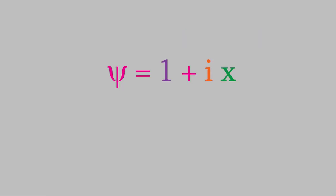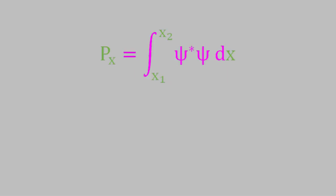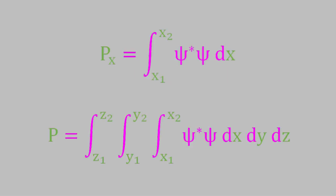What was wrong with that wave function? First, it only had x as a variable. Real systems are three-dimensional, so the wave function would have x, y, and z as variables in Cartesian coordinates. That means we'd need a triple integral to determine the probability of finding the system between x1 and x2, y1 and y2, and z1 and z2.